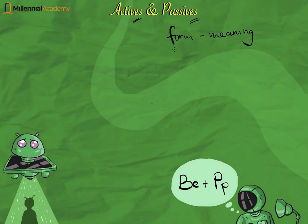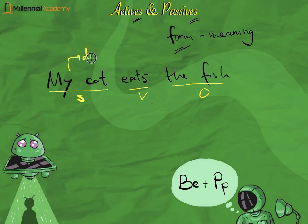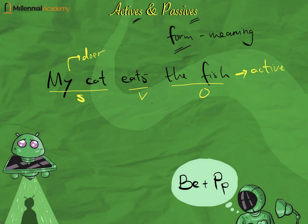Let's begin from the form. I'm going to pick a random sentence: 'My cat eats the fish' — kucing saya memakan ikan tersebut. Let's analyze the sentence: we have the subject, the verb, and the object. The subject is the doer — pelaku — then there's the action 'eat' — memakan — and the fish is the object, yang dikenai oleh perlakuan tersebut. This sentence is called active.